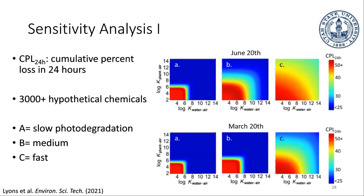We used the model to answer a couple of different questions. This graph shows as the color goes from blue to red, more of that chemical is being lost. Comparing March to June, we're going to lose more in June because we experience warmer temperatures. So we see more of that area become red — because in June you generally have warmer temperatures, which increases volatilization, and you also have stronger sunlight, which increases photodegradation as well.